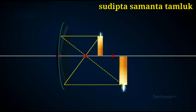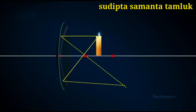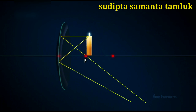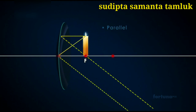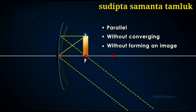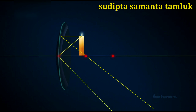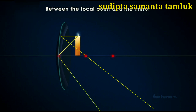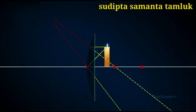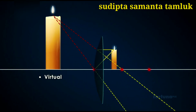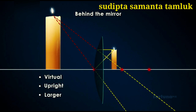If the object is placed at the focal point, the reflected rays pass parallel to one another without converging, and no image is formed. If the object is moved even further toward the mirror, this time between the focal point and the mirror, a virtual image is formed behind the mirror. The image is now upright and larger than the object.